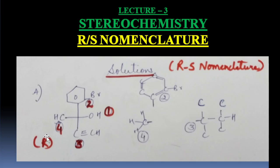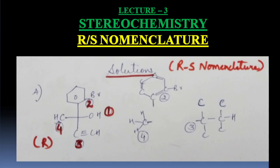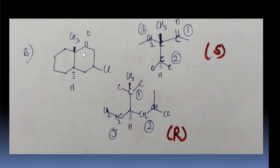Now the second question. This example has 2 chiral centers. First we will discuss this center. CH3 is on bold wedge, and we can see there is H on the wedge line. This is CH2 and this is C with oxygen (Cu). One number is given to Cu because that carbon has oxygen, giving it first priority.